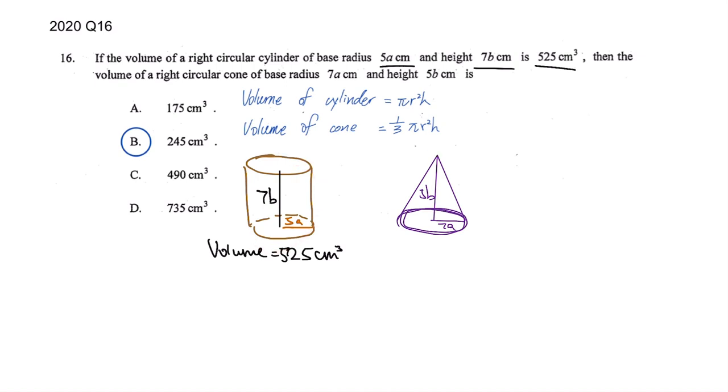And then for cone it's just the same - πr²h - but then because there is a pointy point here, so we have a one over three as well. So let's get doing the first one for a cylinder.